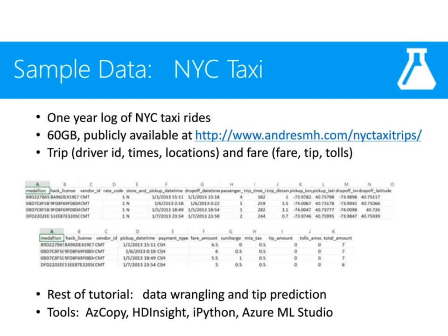On screen now you should see a couple of examples of this data set. The top panel is basically the trip data, and the bottom panel is the corresponding fare data. In the rest of this tutorial, we will do some data wrangling and finally wrap up with some tip prediction.